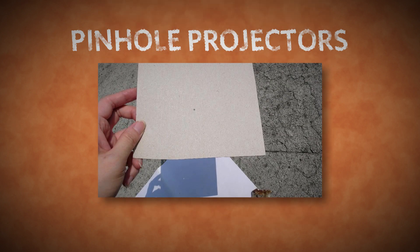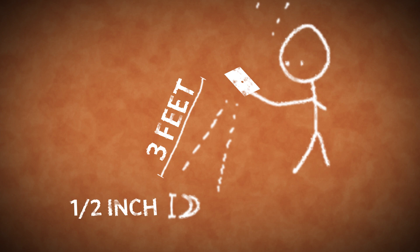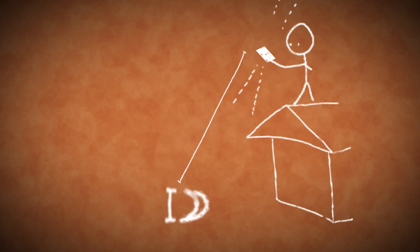Pinhole projectors work well for deep partial eclipses. Poke a round pinhole through a piece of stiff paper or cardstock, and let the sun's light shine through it onto a shaded surface, and you'll see a tiny image of the sun. If you're projecting about three feet, the image of the sun will be about a half inch in diameter. And again, the greater the projection distance, the larger the image.